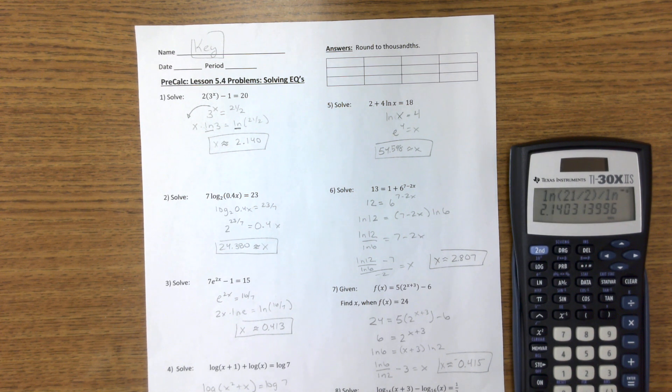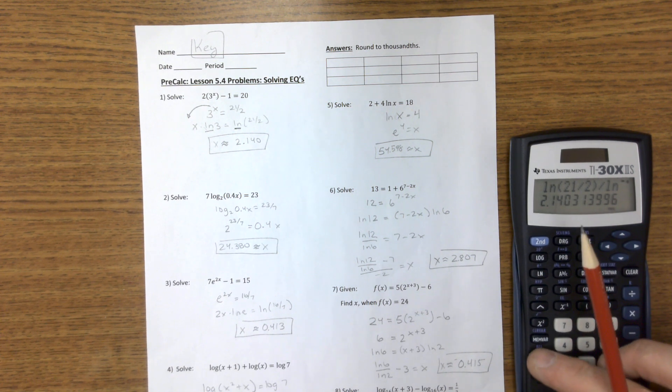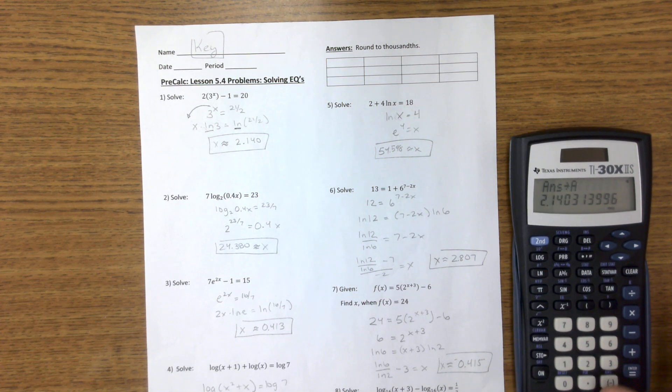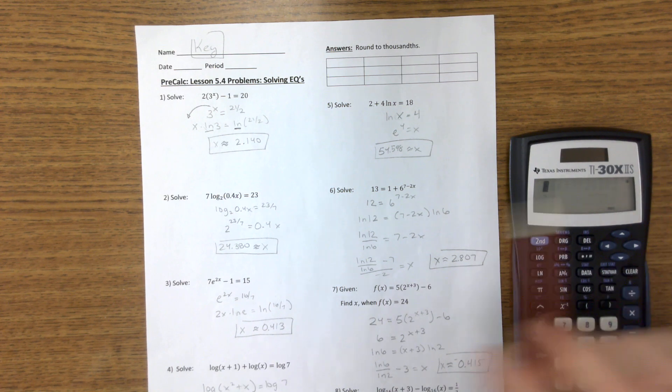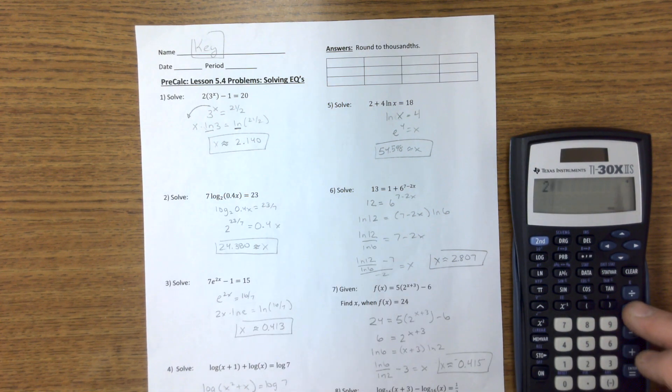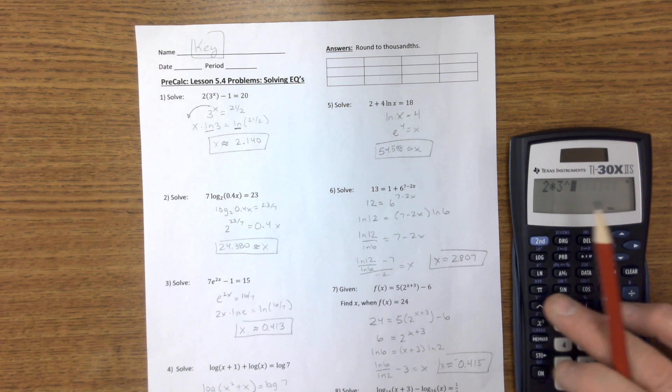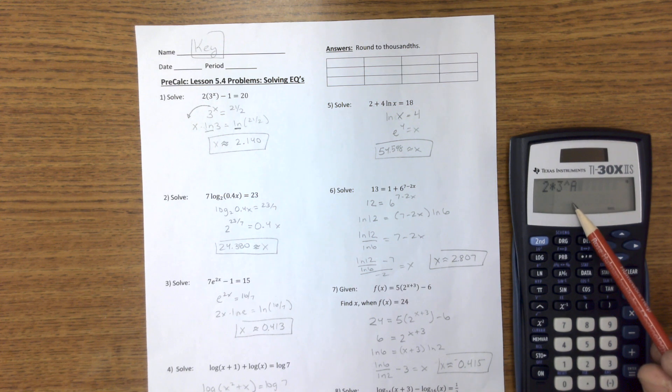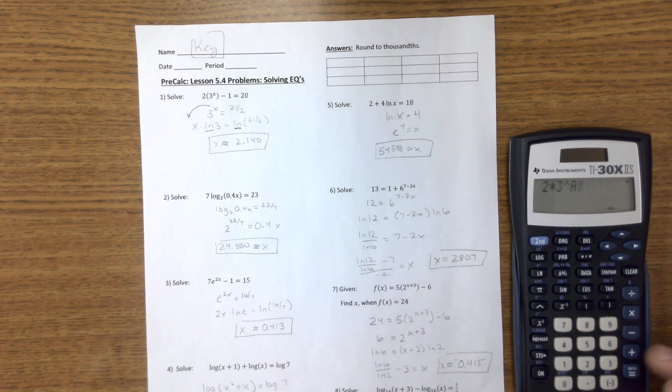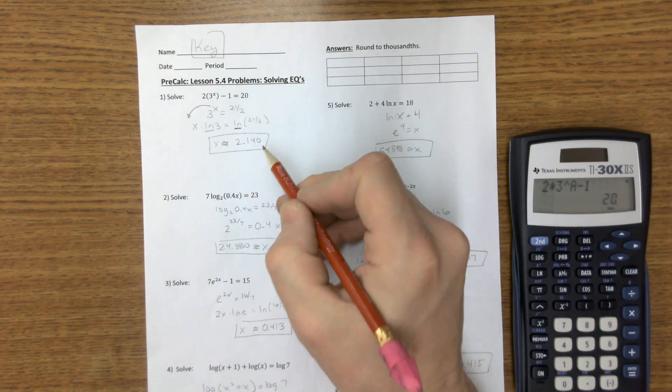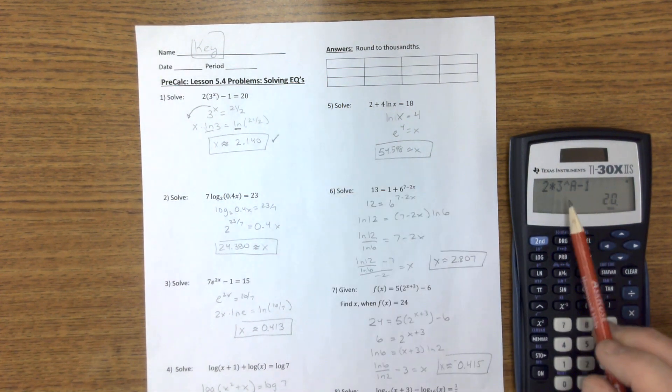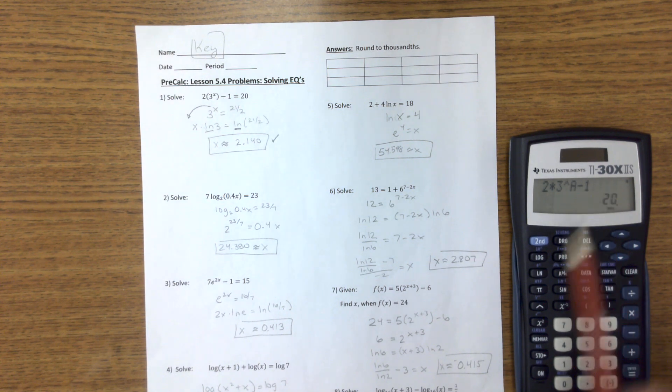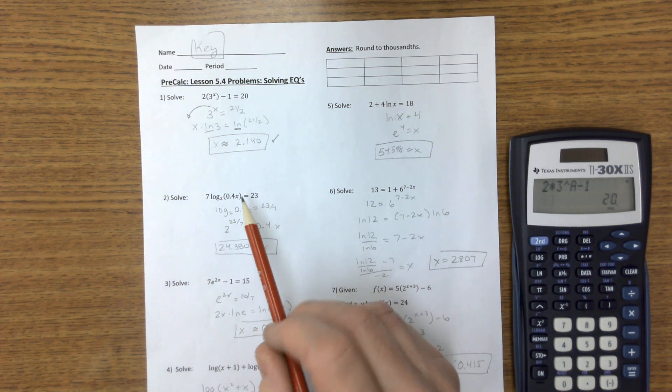Now what you're going to want to do on these problems is take that number, store it in our calculator, or write it down. I'm going to redo this problem: 2 times 3 raised to the exponent of now that number. If you don't know how to store that number in there, just write that number down. Minus 1. And there we go, it's 20. You're going to want to go back and check all of them that way, especially on a test or quiz or homework. Go through and check all your answers and make sure they're right. If they're not right, go back and try and find your mistakes.